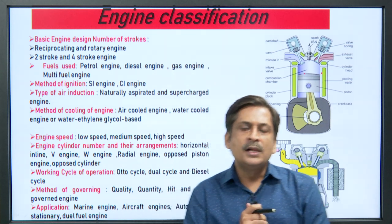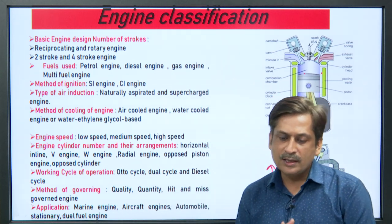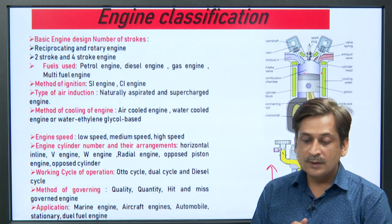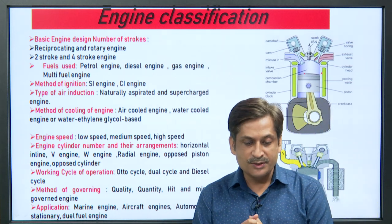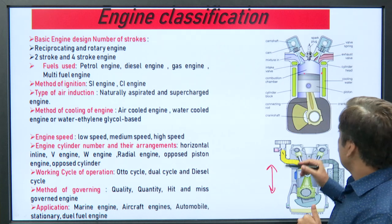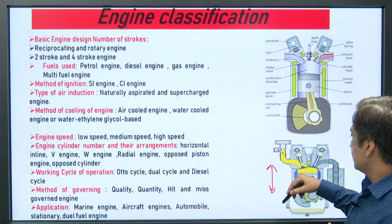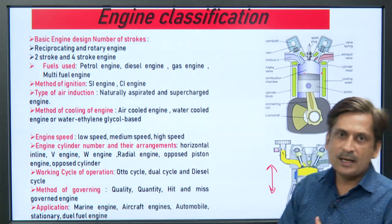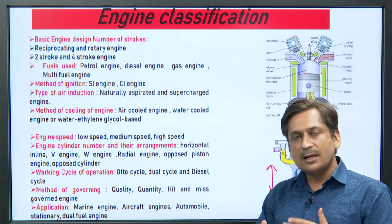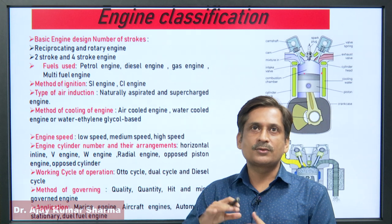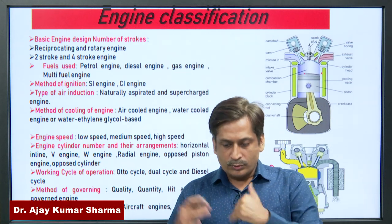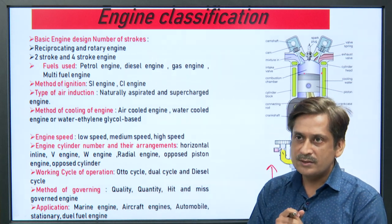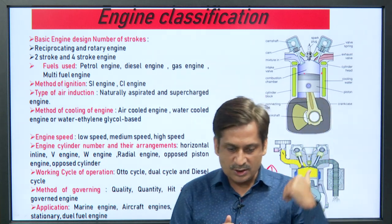You should be able to classify any engine. You can classify an engine on the basis of engine design and number of strokes — either 2-stroke or 4-stroke engine — reciprocating or rotary. If the piston movement is back and forth, it is a reciprocating engine. After 1950, we were able to develop engines which work on the principle of rotary engines as well. Rotary engines can achieve higher RPM because there are friction losses in reciprocating engines.